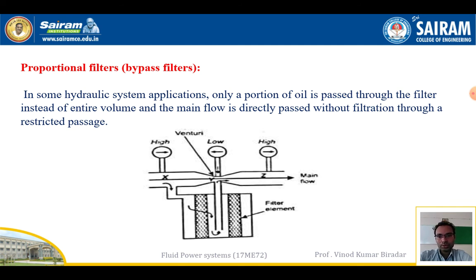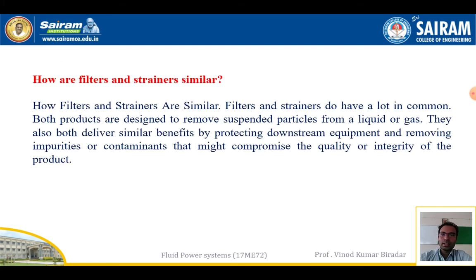The second type is the proportional filter, also called a partial or bypass filter. In this arrangement, only a portion of the oil is passed through the filter instead of the entire volume. The main flow is directly passed through a restricted bypass passage without filtering. Only the desired quantity of fluid is filtered — this is called a bypass filter.